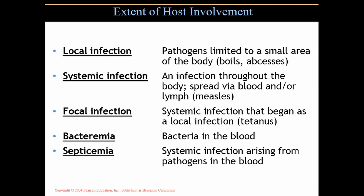Measles is a systemic infection — it manifests on the skin and presents there with that macular rash that forms all over the body. A focal infection is a systemic infection that began as a local infection. Tetanus, for example, starts as just a puncture wound and becomes systemic over time. Rabies is a focal infection — it starts from an animal bite and spreads to the entire body.